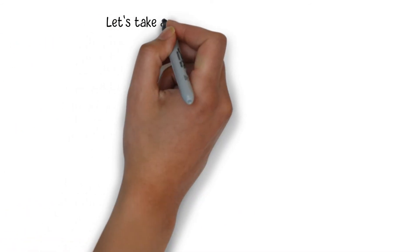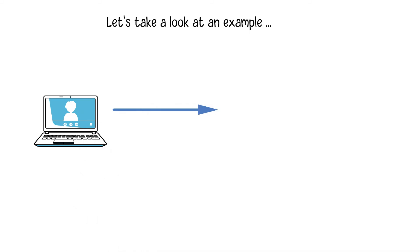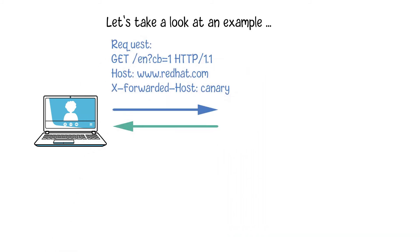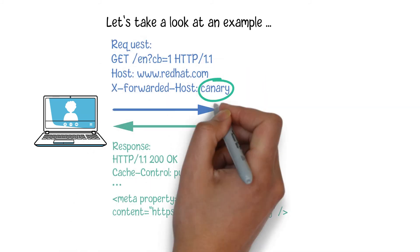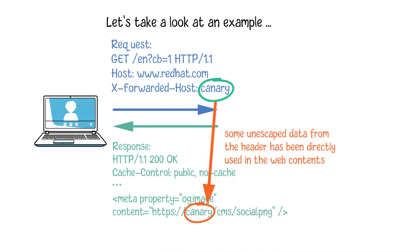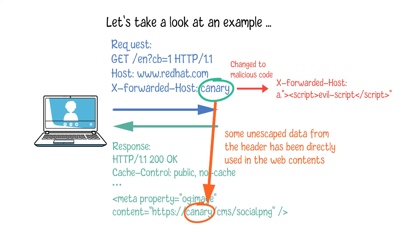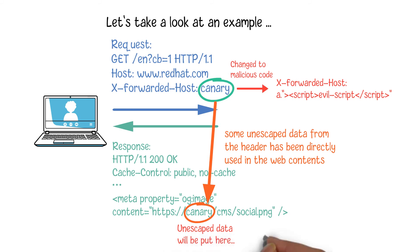Let's take a look at the following example about the manipulated HTTP request. If we send the following HTTP request, we will get the corresponding response from the server. You can see some unescaped data from the header has been directly used in the web contents. If we change the request data by using some special content, it will form a perfect cross-site script which enables the response to contain malicious code. We can see that the response contains some malicious JavaScript code which will run automatically once the page is loaded.